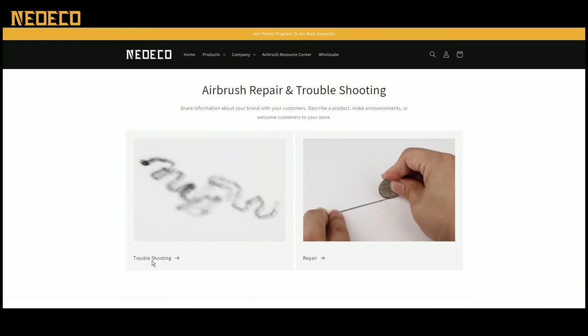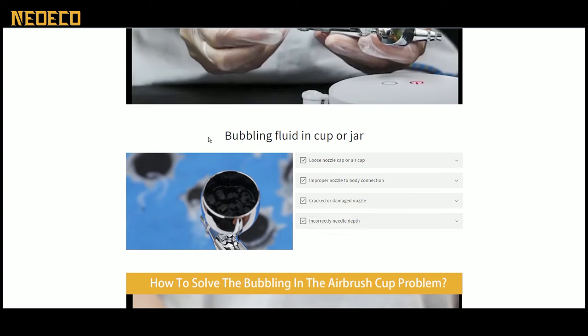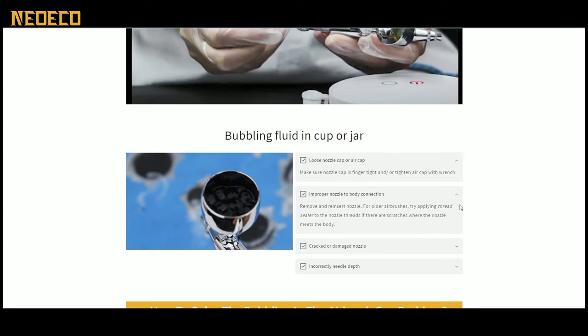In approximately 95% of cases, the problem can be traced back to an untightened air cap. Thus, the first step is to tighten the air cap sufficiently to see if the problem persists. If the issue persists, the next step is to inspect the nozzle-to-body connection. For airbrushes with an auto-centering mechanism, ensure that the gasket is in good condition and that there are no leaks in this area.